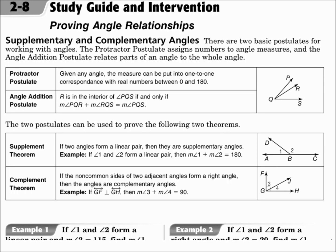The protractor postulate tells you how to measure an angle with a protractor, and your answer will be between 0 and 180 degrees. The angle addition postulate says that if two angles join together to form a bigger angle, then you add up the parts to equal the whole thing.